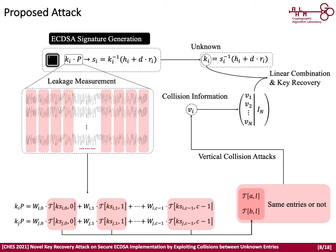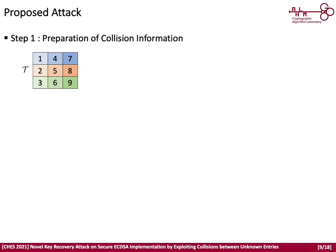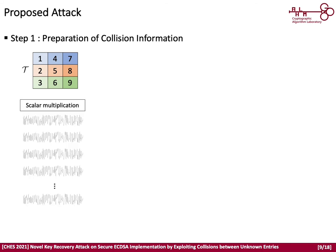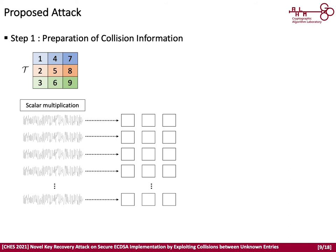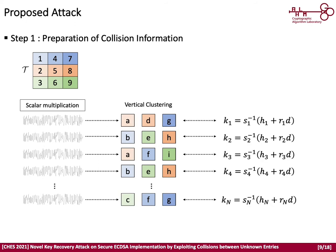Next, I will show how the attacker can find the linear dependency. For convenience, we consider a 3×3 precomputation table as an example. The attacker has no information on the precomputation table, but by side-channel analysis can easily guess security parameters like the table size. Each trace includes leakage on table entry referencing, and the attacker clusters sub-traces vertically to get collision information. The attacker's goal is to find linear dependency of nonces using only this collision information for recovering the secret key.